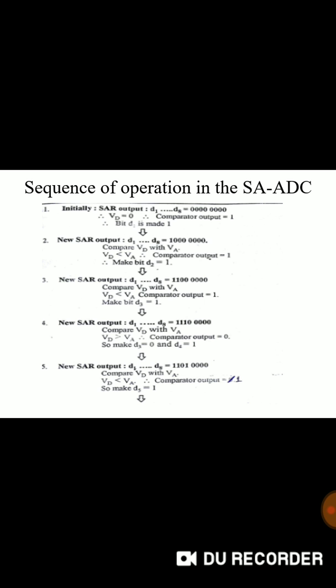Initially all values will be 0. SAR output when difference is 0 comparator output will be 1. D1 is 1. Remaining all will be 0. And eventually after successive comparisons, we can get final output. Every time value of VD and VA will be compared.